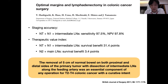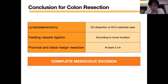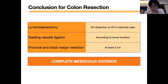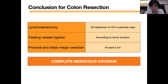For the conclusion of colon resection, I recommend: first, lymphadenectomy — you can do standard D2 dissection or D3 dissection in selected cases. D3 dissection is recommended when there are clinically positive lymph nodes. If you see many lymph nodes around the feeding vessel, you can extend your lymphadenectomy. Routine extended lymphadenectomy is not recommended because the survival benefit is low compared to the morbidity — it is not worth doing in every case.